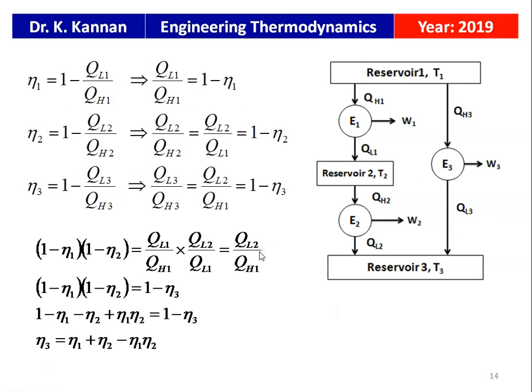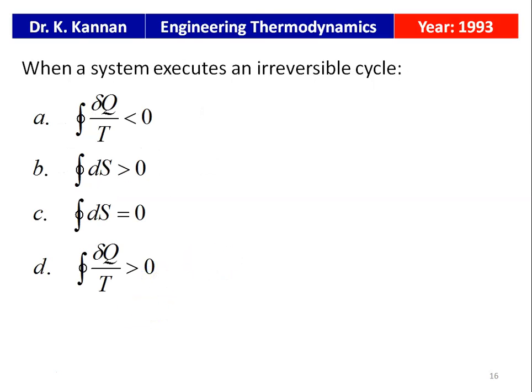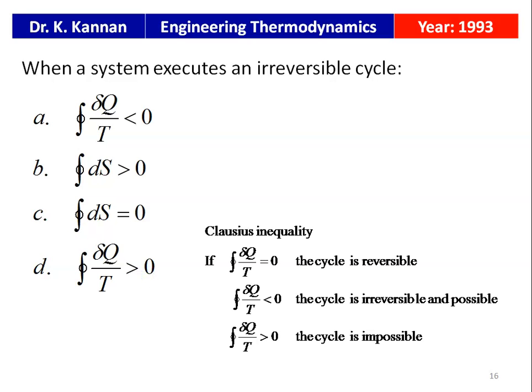Next question from the 1993 question paper. Which relation is valid only for reversible processes undergone by a pure substance? The answer is δQ = pdv + du. When a system executes an irreversible cycle, which statement is correct? From the Clausius inequality, for an irreversible cycle, the cyclic integral of δQ/T < 0. That is option A. For a reversible cycle, δQ/T = 0; for an impossible cycle, δQ/T > 0.